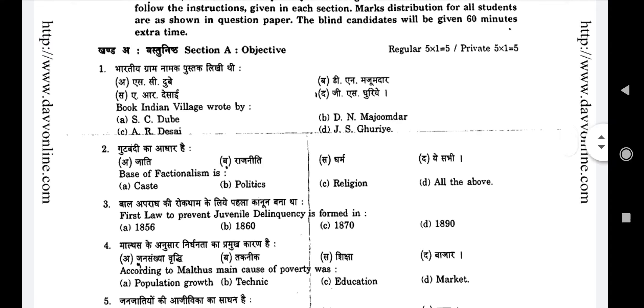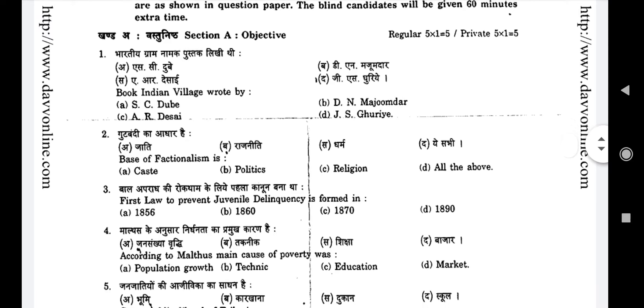Second question is: The base of factionalism is — Option A: Caste, Option B: Politics, Option C: Religion, Option D: All of the above.